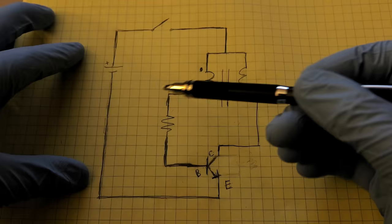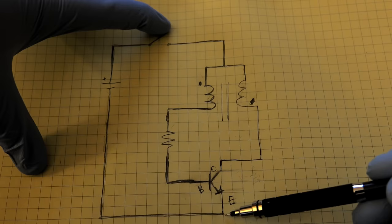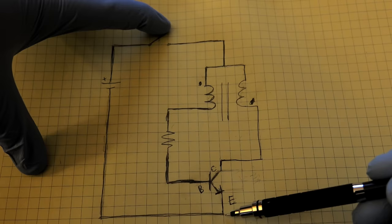So when we press the push button, the current begins to flow. And it can't flow this way yet because the collector is still closed because the transistor is off. So the current flows through this coil, through this resistor, through the base, out the emitter.